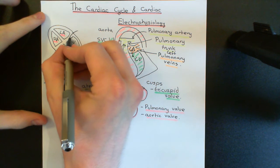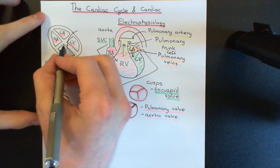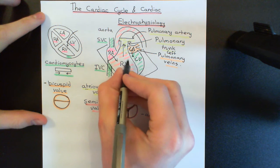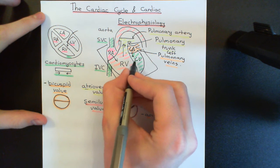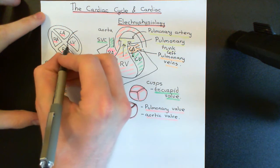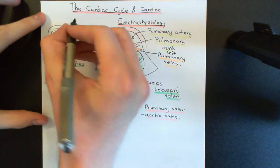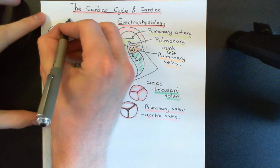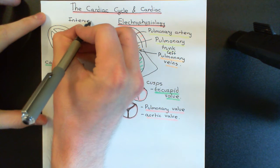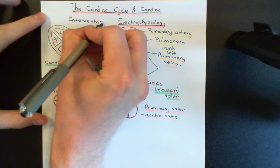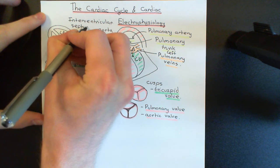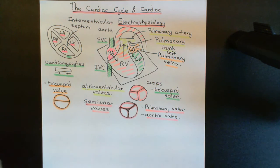One of the things I want to label up is this septum in between the two ventricles - this portion of cardiac tissue that is separating the right ventricle from the left ventricle. We're going to talk about that a lot and it's called the interventricular septum. We will be talking about that a lot once we actually come on to the cardiac electrophysiology.